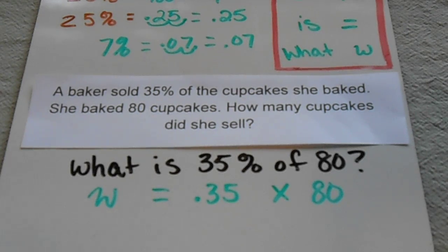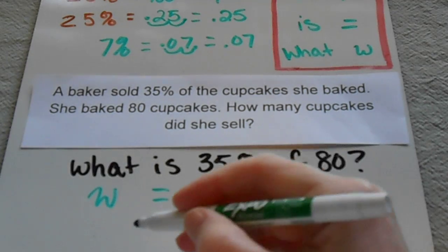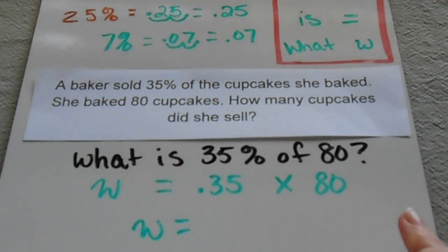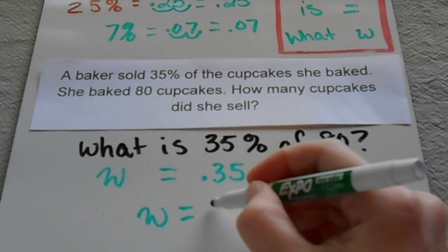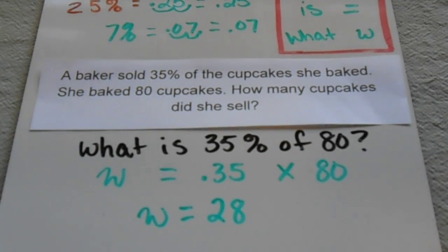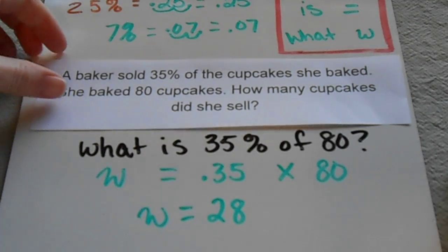So since I have my variable here on this side, I just have to multiply these two together to find that my 'what' equals 28. So out of the 80 cupcakes that she baked, she sold 28 of them.